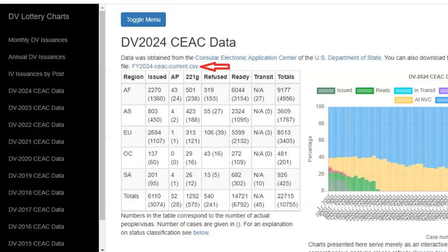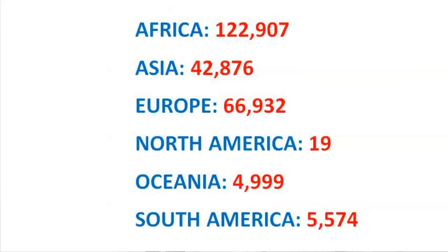The final thing concerning this first downloadable spreadsheet file for the DV 2024 program is that it reveals the highest case number in each region. For this year's program, the highest case numbers are as follows: Africa region — 122,907; Asia region — 42,876; Europe region — 66,932; North America region — 19; Oceania — 4,999; and South America region — 5,574. Those are the highest case numbers in the DV 2024 program.